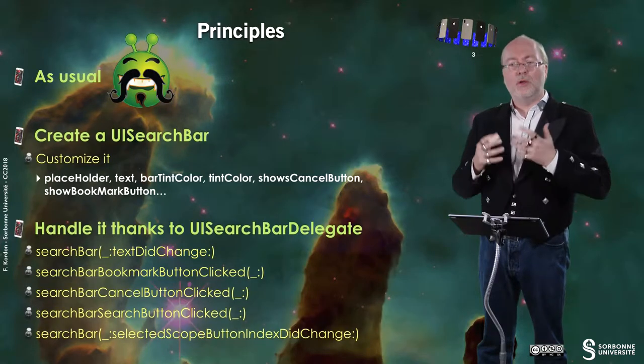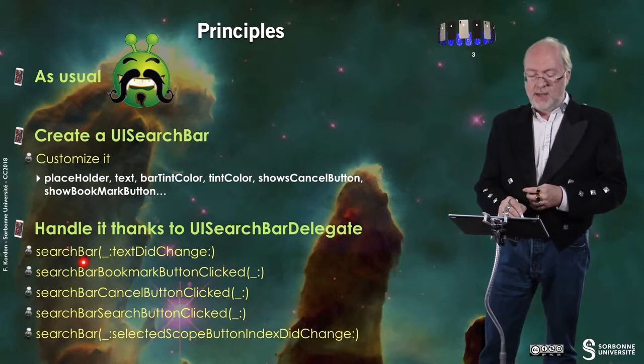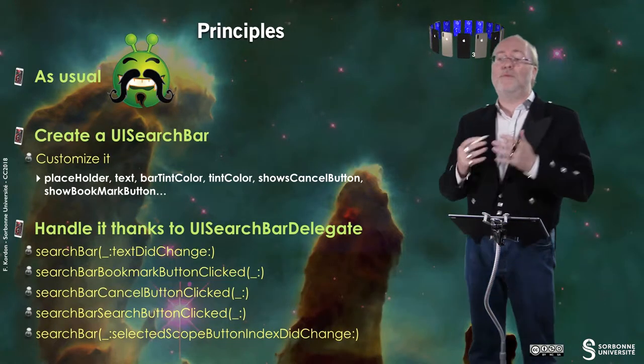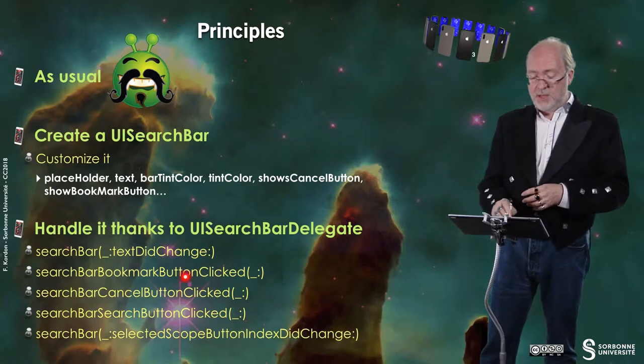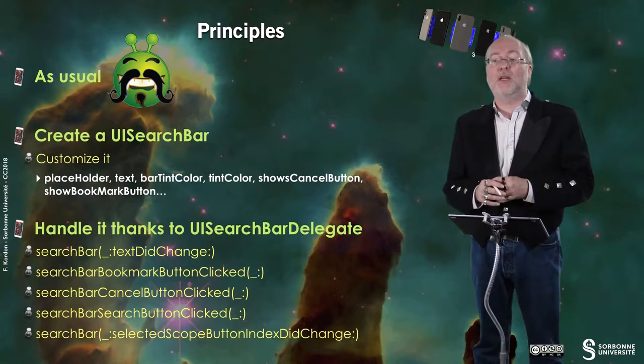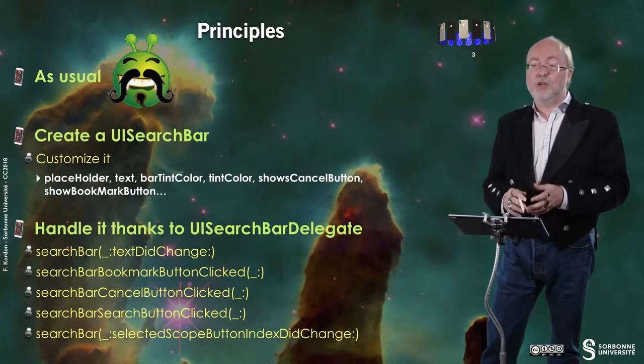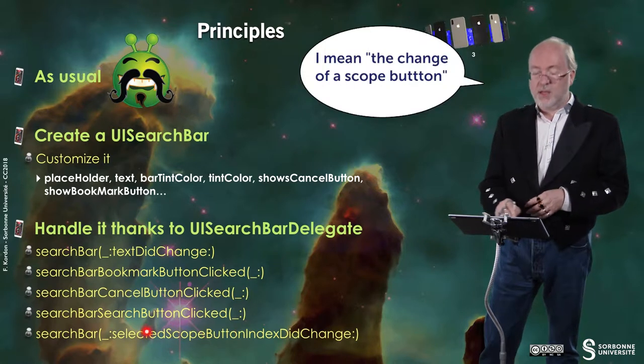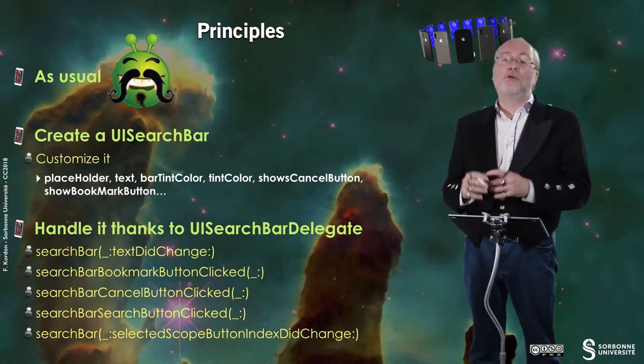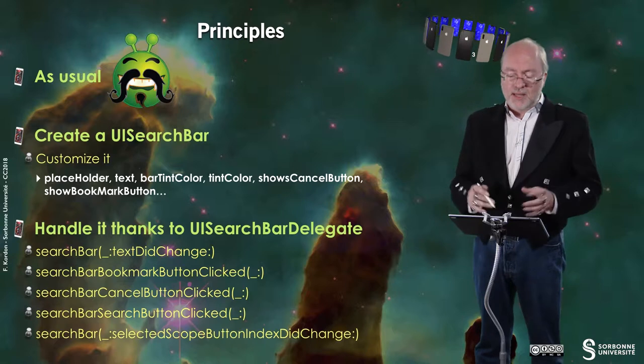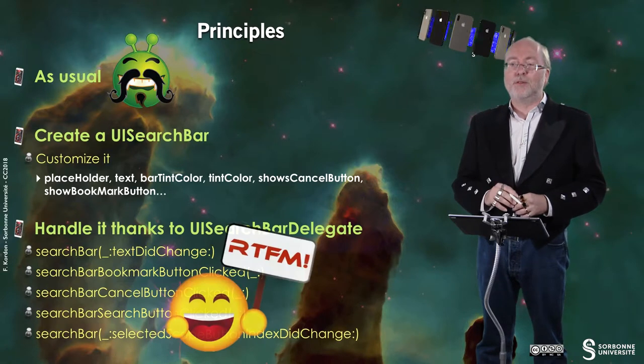And then you want the list thanks to a protocol called UISearchBarDelegate. And here are the most useful methods you have to implement in this protocol. They are all optional. The first one allows you to capture when the text has been updated. This one allows you to capture when the bookmark button has been tapped on, if it exists. Similarly with the cancel button. Similarly with the search button, if it's in. And of course you can have here some information about the change of a text. And you also have another one I don't mention here, but that can be useful when the edition ends. But basically you have lots more methods, but just have a look at the Fantastic Manual. You get the idea of it here.